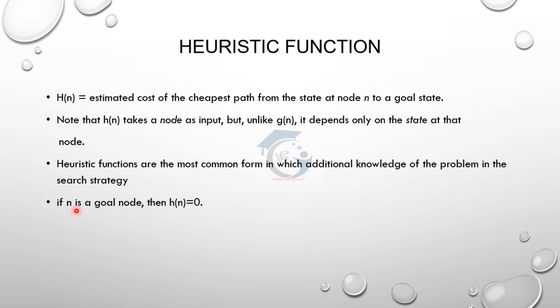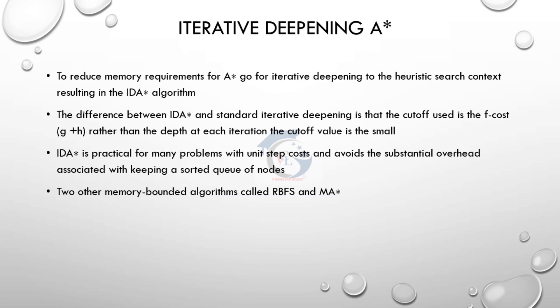Looking at the current state and the goal state: if the current state is the goal state, then the value of h(n) is equal to 0. In most cases, we find the path and the goal condition together.